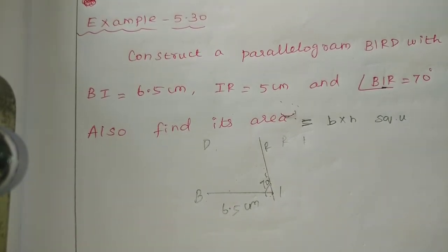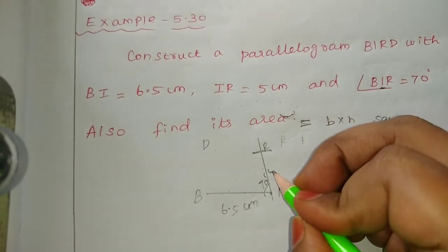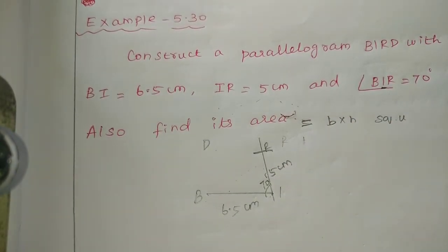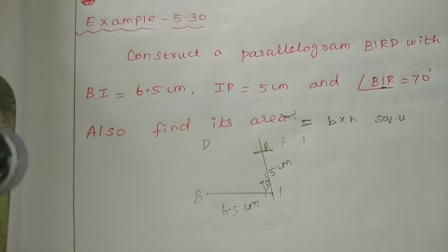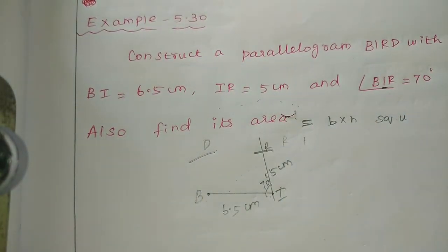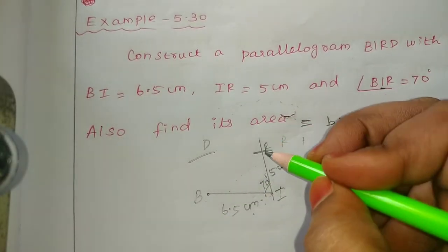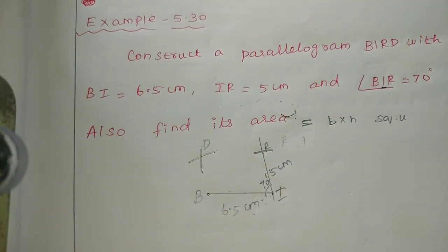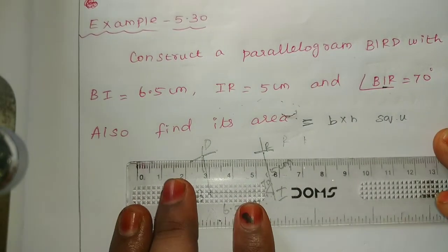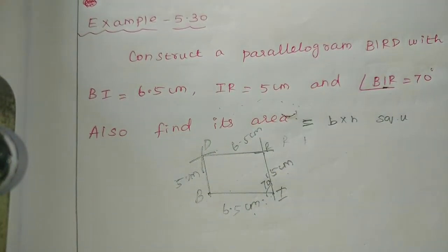Now, what do we do? IR equals 5 cm. In a parallelogram, opposite sides are equal. So IR part is 5 cm. Parallel sides are also parallel. BI is parallel to the opposite side, and BI is 6.5 cm. So we join to complete the rough diagram with BI = 6.5 cm and IR = 5 cm.